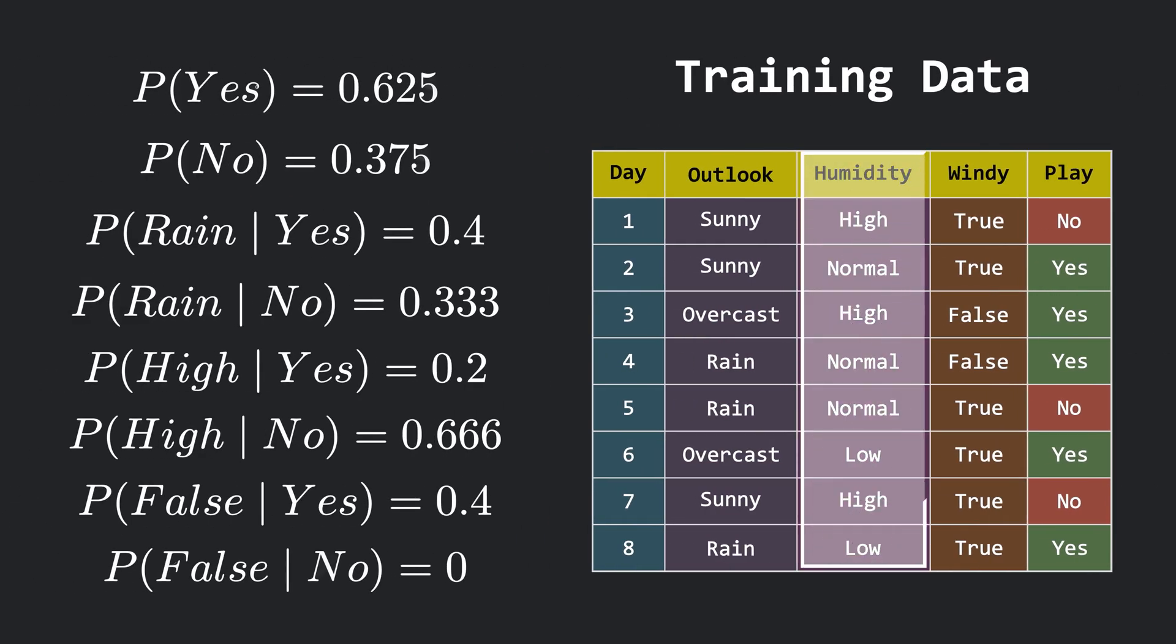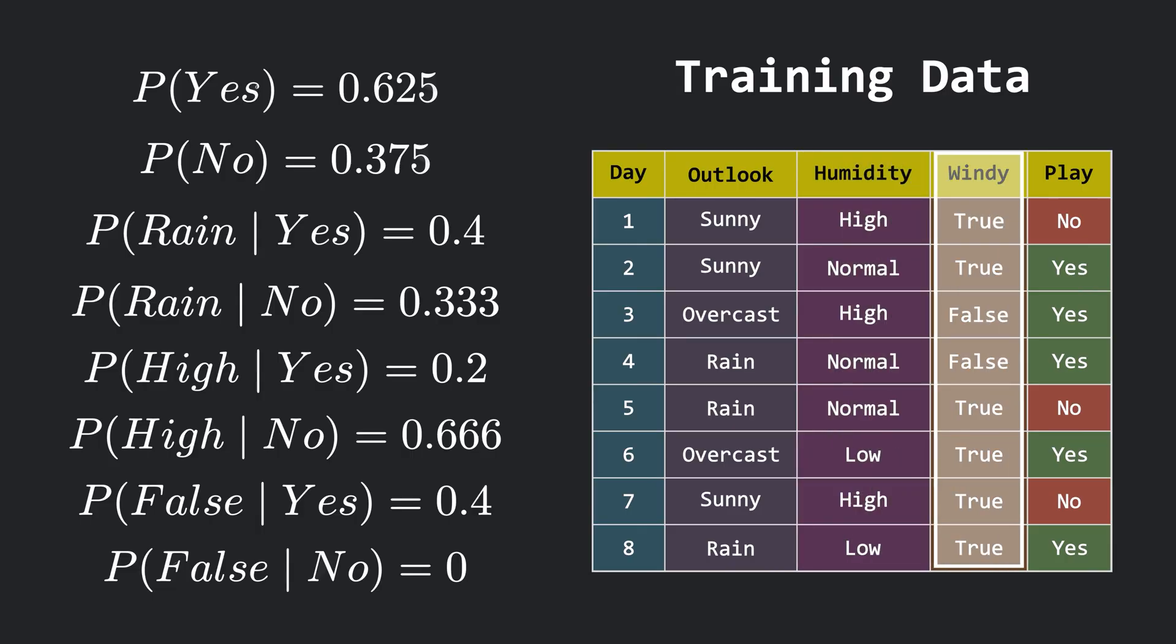For example, humidity can have three values: high, normal, or low. So the value of vf will be 3. And for the windy feature, it can either be true or false. So in that case, the value of vf will be 2. Now if you didn't understand the formula, don't worry, it will all get clear in just a moment.